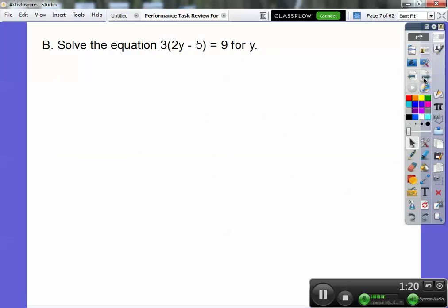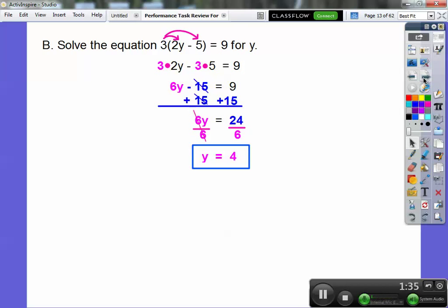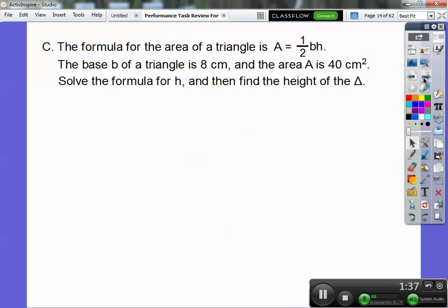Solve the equation. We're going to distribute the 3 through, so 3 times 2y is 6y plus 15. Then add 15 to both sides, and we get 6y equals 24. Finally, divide and we get y equals 4.